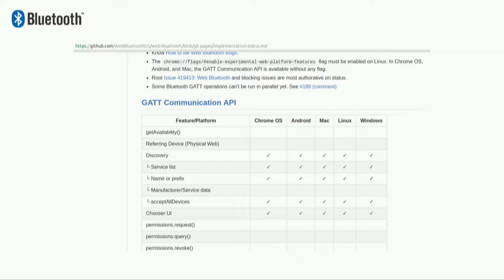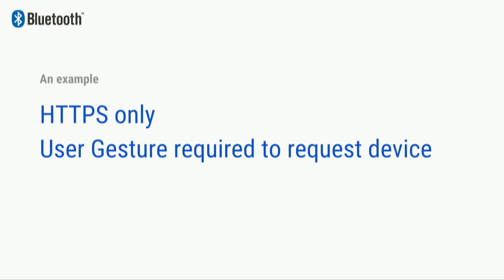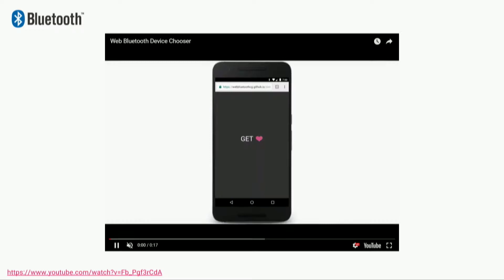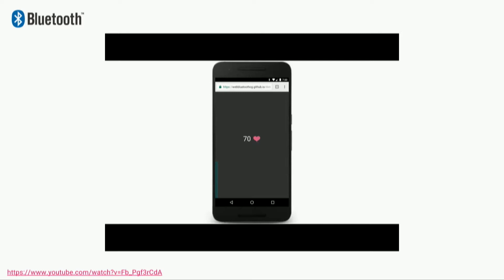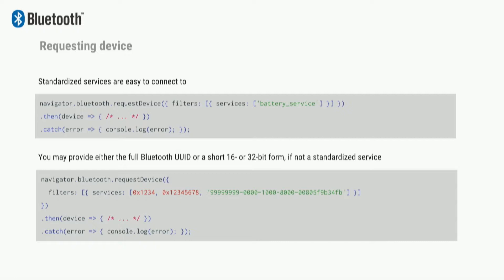Support is getting pretty good in Chrome and it works really great on Android. To use these new technologies and keep the web safe, HTTPS is a requirement. You also don't want to be browsing a news site and have it suddenly connect to one of your devices at home. So it requires a user gesture — like clicking a button — in order to connect to a device. It looks something like this: a heart rate monitor, I click it, a dialog pops up, I select my device, and there you go. Really frictionless.